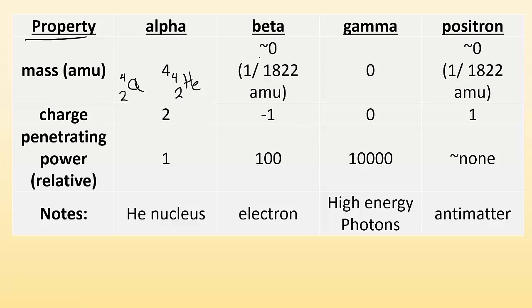Beta particles have a mass of almost zero. It's not actually zero. It's 1 over 1,822. So, you would need almost 2,000 of them to equal the mass of just one proton. So, we say it's almost zero. Its charge is going to be negative 1, and its penetrating power, relatively speaking, is 100, because it's less massive, and it can travel further without interference. And other notes is, it's basically an electron. It's an electron coming out of the nucleus.